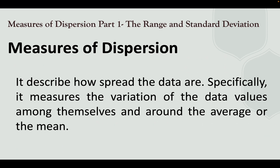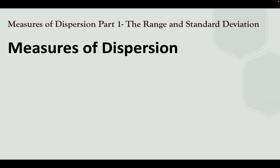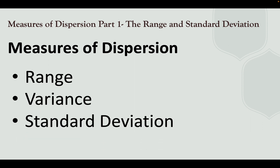Let us define first what Measures of Dispersion is. It describes how the spread of the data is. Specifically, it measures the variation of the data values among themselves and around the average or the mean. There are three components of Measures of Dispersion: the Range, Variance, and Standard Deviation.